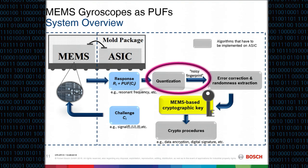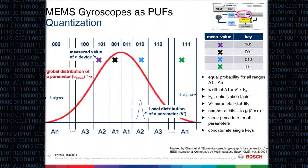Here is a short overview of the different parts needed to derive a key from the MEMS. We get responses from the MEMS — essentially our analog measurement values — and the next step is to quantize those analog values properly into binary strings, yielding a kind of noisy fingerprint, or bit string.